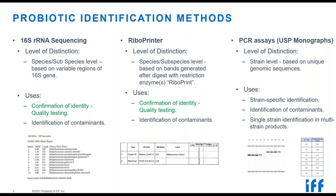PCR assays, captured in USP monographs, have a level of distinction at the strain level. They're based on unique genomic sequences and are used for strain-specific identification, contaminant identification, and single-strain identification in multi-strain products and matrices — for example, in yogurt or fermented foods.